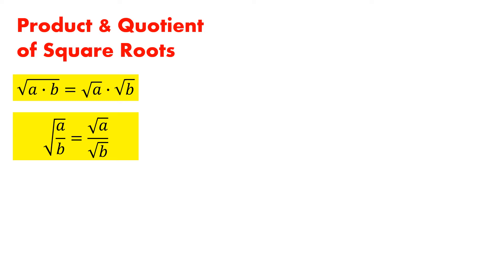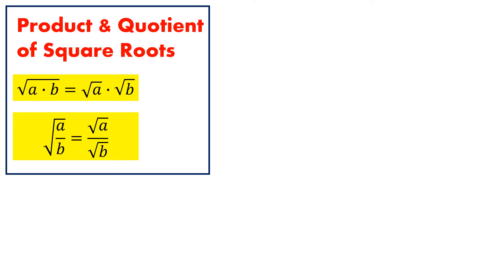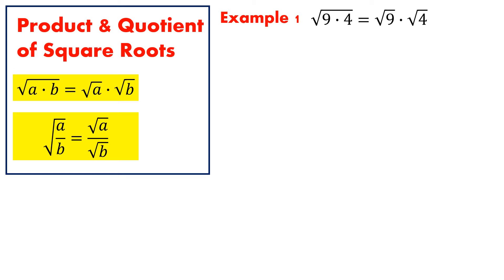We could see that these ideas are true by looking at some examples. In example 1, we need to show that the square root of 9 times 4 is equal to the product of square root of 9 and square root of 4. Let us look at the solution. Note that the left-hand side and the right-hand side are equal to each other.